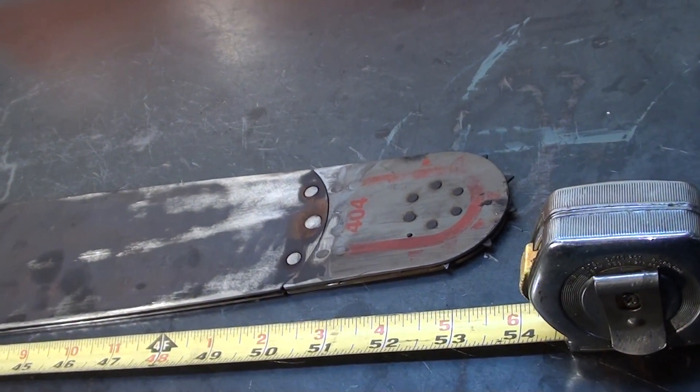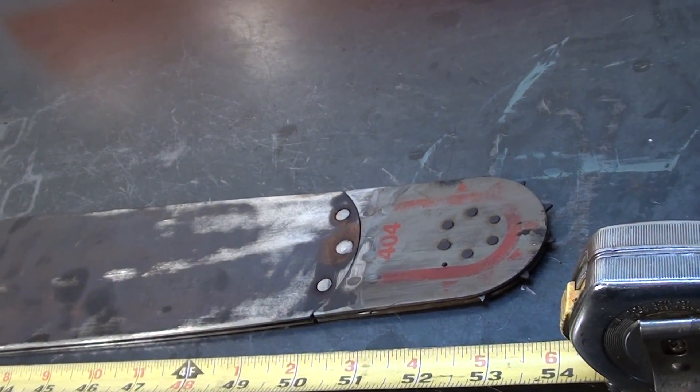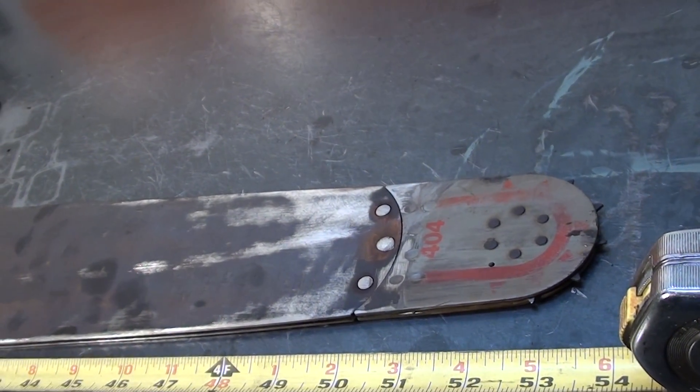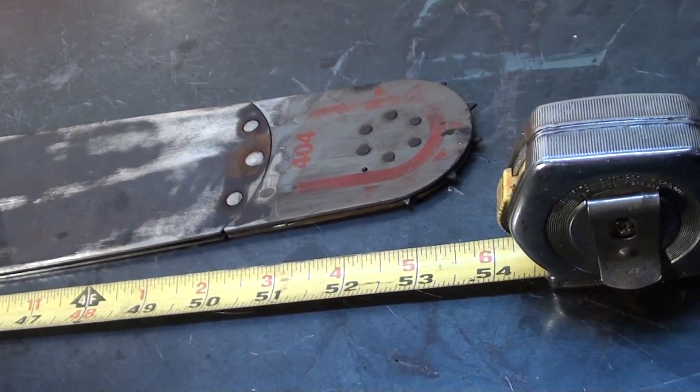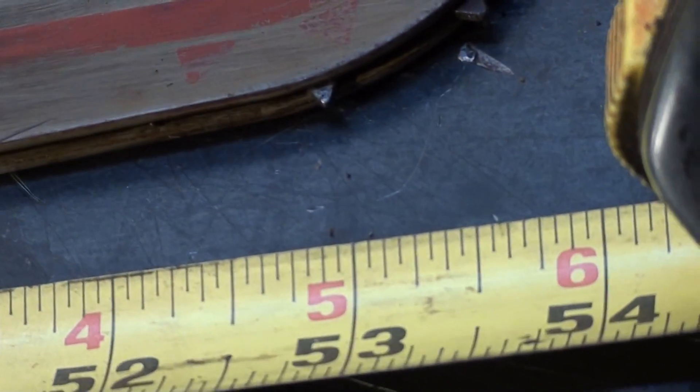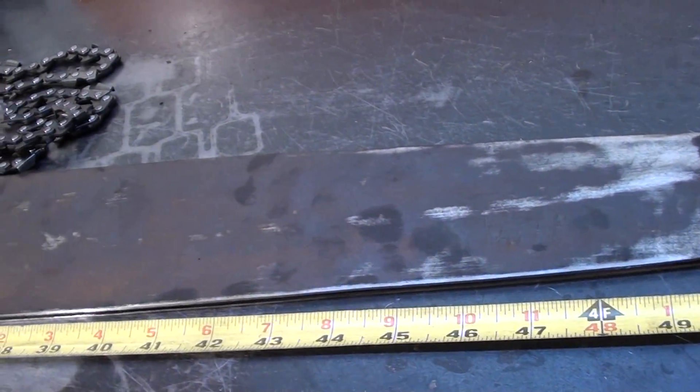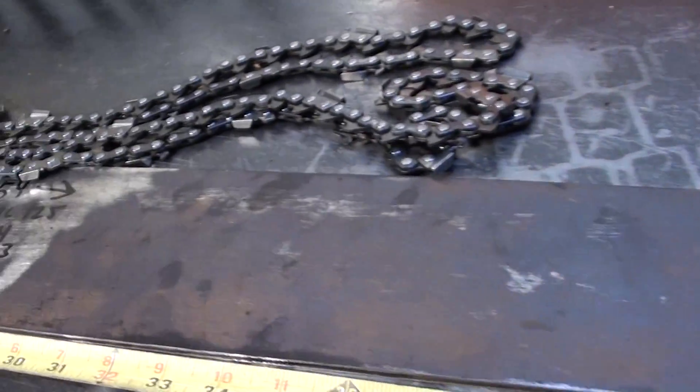Hello, welcome to Shop Talk. We're looking at a McCullough 125 bar. It's a .404, .063 gauge and it measures 54 inches from tip to tip. If you want to have a nice long bar for your Super Pro 125, here's a great bar.